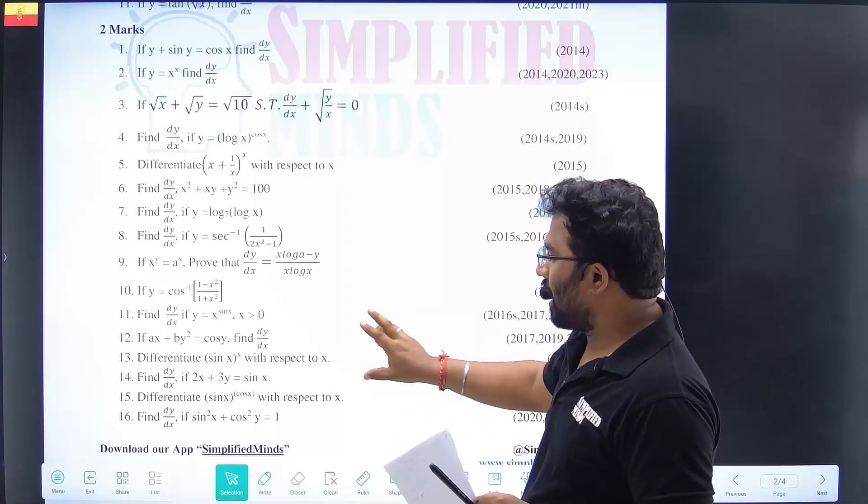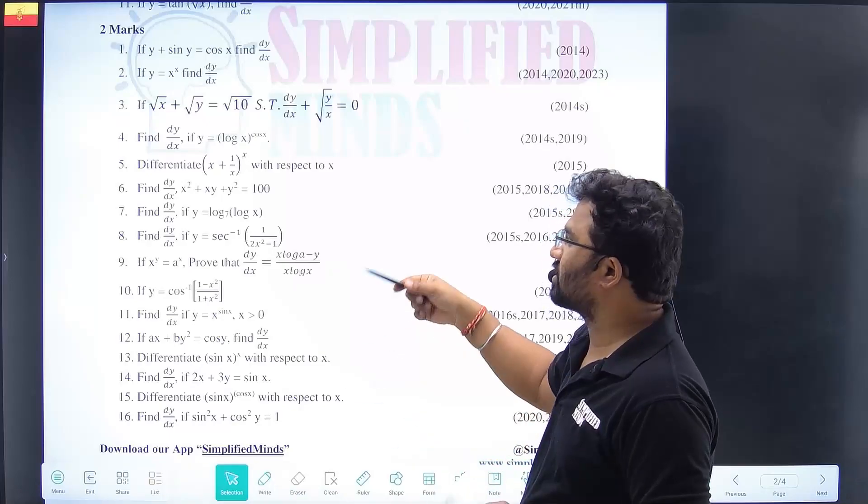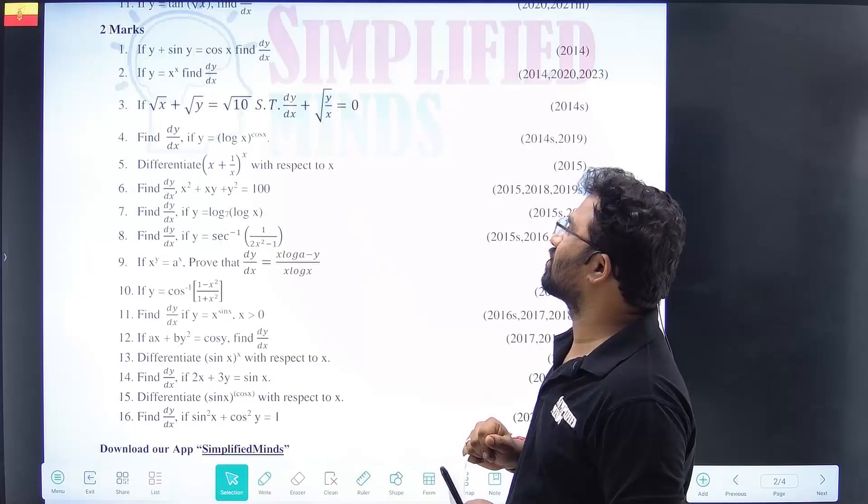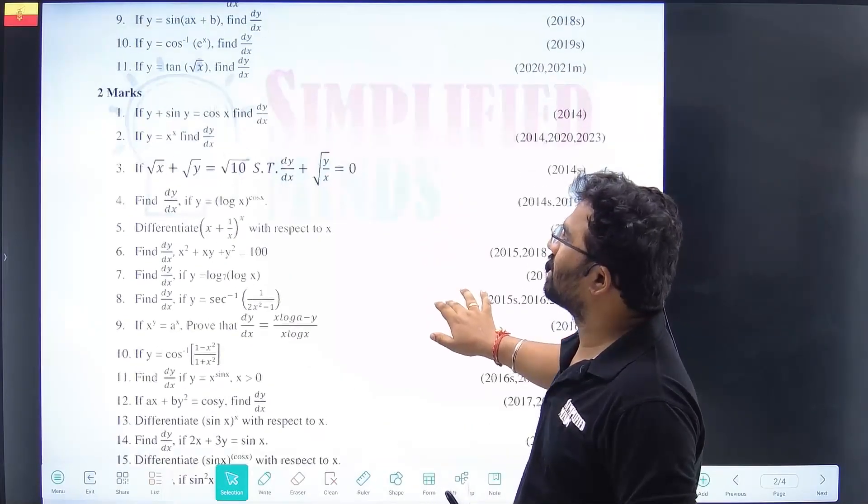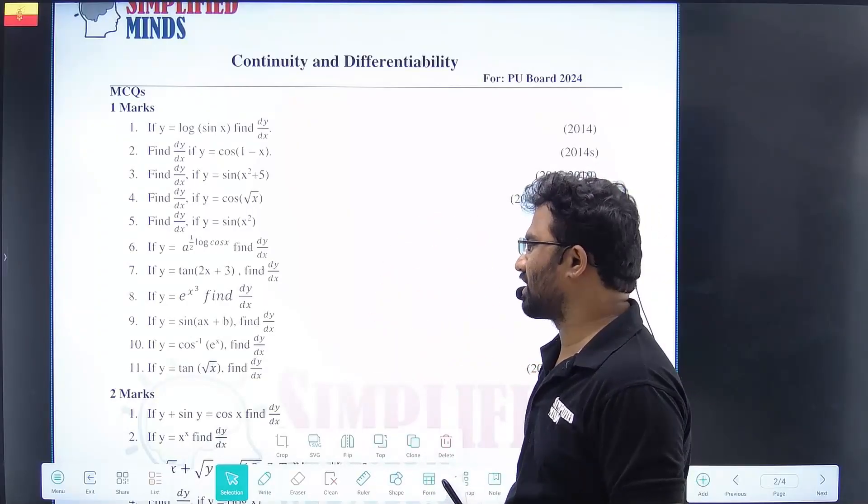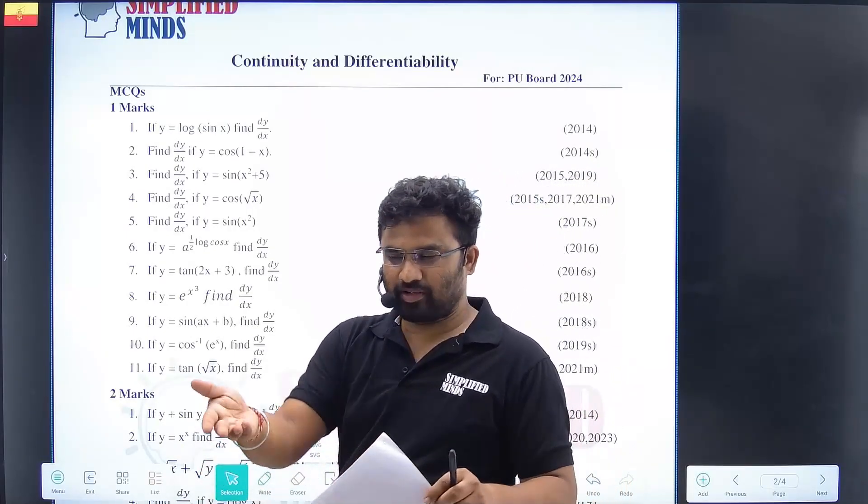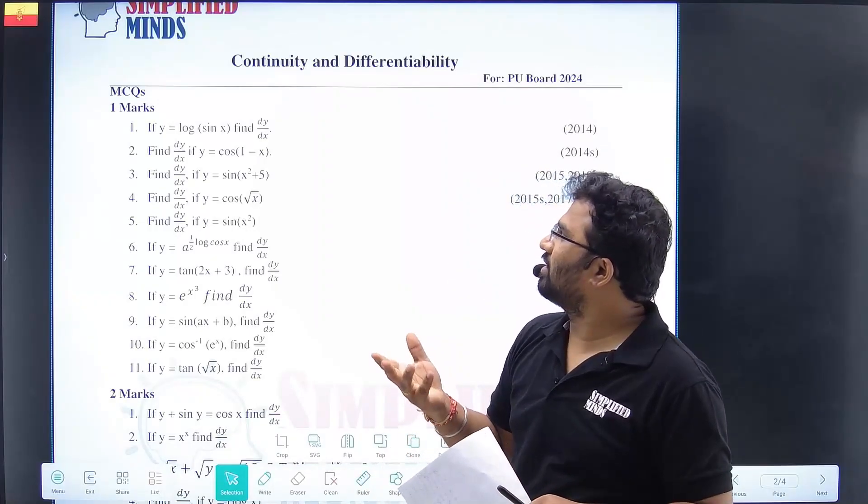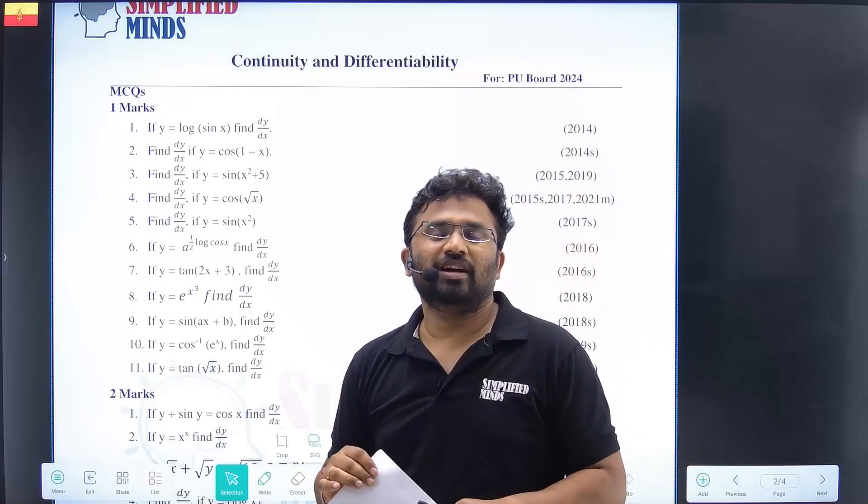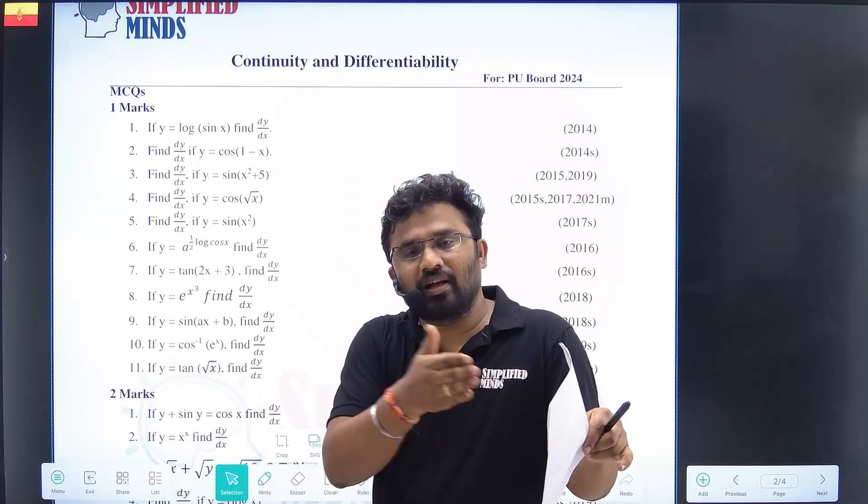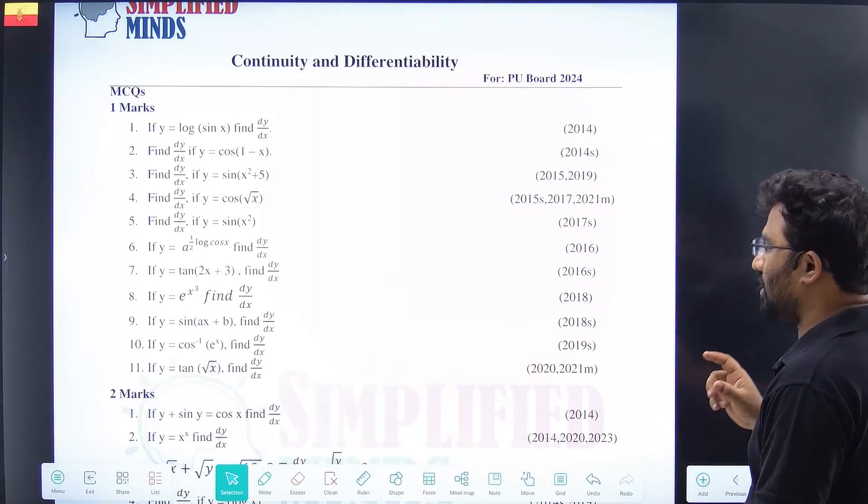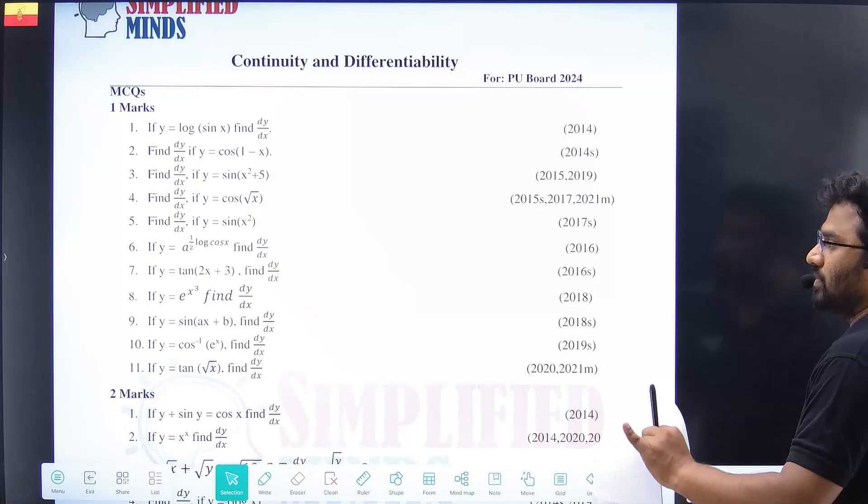Next, there may be one or two questions like proving root x plus root y equals root n - one marker simple questions. In 2024, they may ask fill in the blanks, but I don't think they'll be tough - basic answers. These one markers, two markers - you have to focus on methods of differentiation.